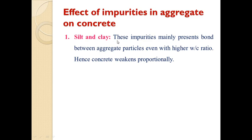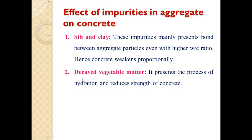Before using the aggregates, the impurities — silt and clay — should be washed thoroughly so these impurities will be removed. Next is decayed vegetable matter: decayed vegetable matter retards the process of hydration and reduces the strength of concrete.